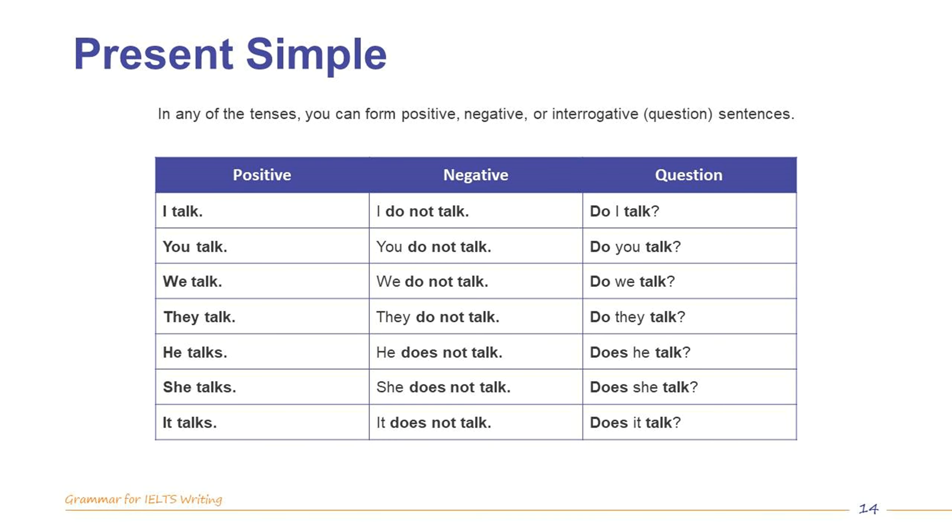Now let's look at the present tenses. In any of the tenses, you can form positive, negative, or interrogative sentences. Interrogative means question. Note that in written English, we usually write do not and does not. However, in spoken English, this is contracted to don't and doesn't. In the IELTS exam, you should try to follow this rule.